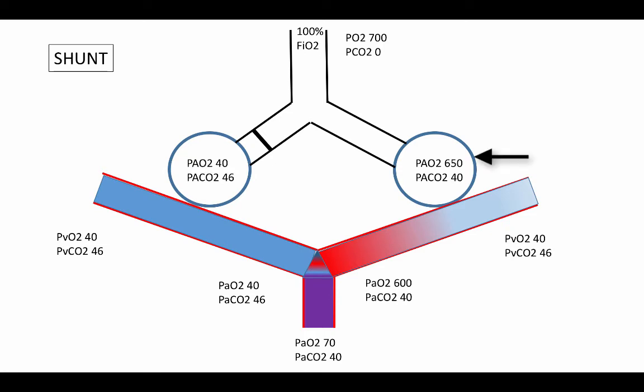This becomes more apparent when we deliver 100% inspired oxygen. The normal areas of the lung, such as the right side of the picture, have the expected increase in partial pressures of oxygen, whereas the area of shunt is not exposed to the inspired gases and only exposed to the venous gases to equilibrate. The resultant admixture of the venous blood and the newly oxygenated blood creates a combination where the partial pressure of oxygen is still low.